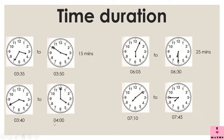The time on this clock is 3:40. Suppose you started getting ready at 3:40 and had to go somewhere, and you left your house at 4 o'clock. Now you want to find out how much time did you take to get ready. Let us start counting after 3:40: 5, 10, 15, 20. For the clock to reach 4 o'clock, 20 minutes will be added. So the time duration is 20 minutes.